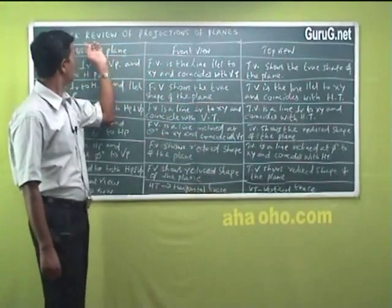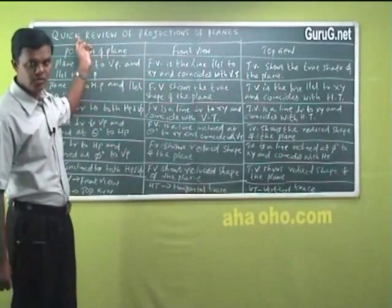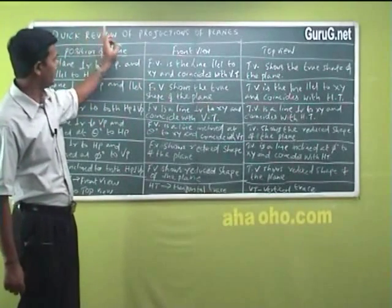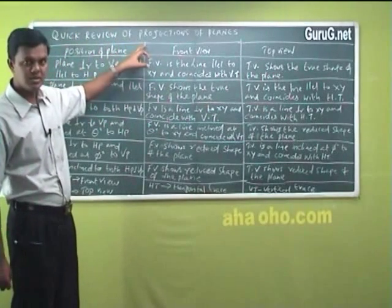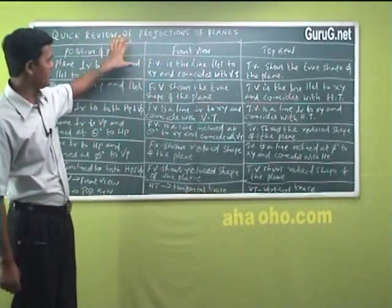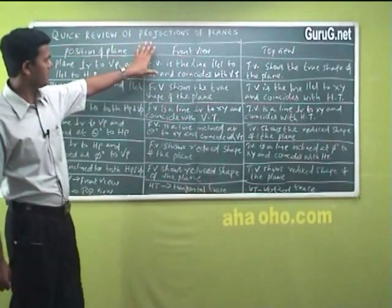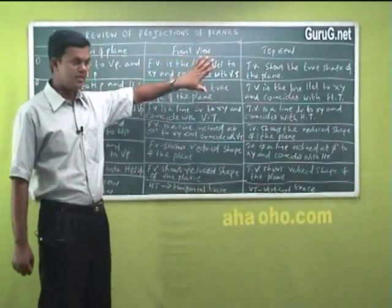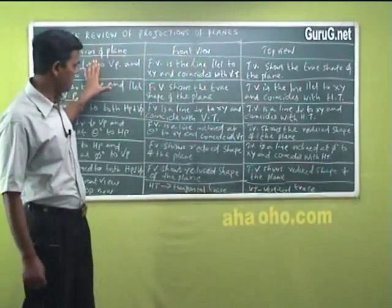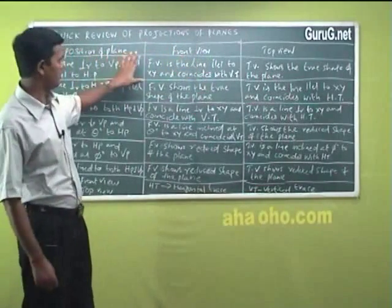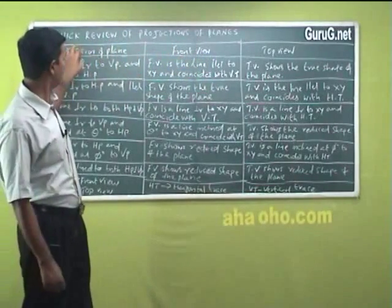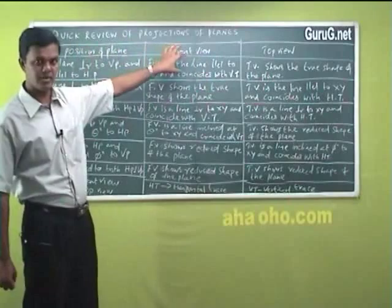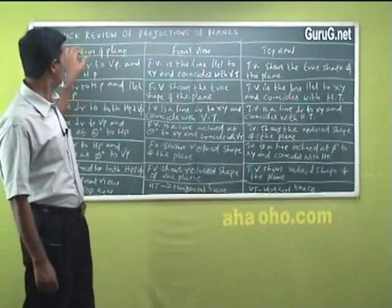This is a quick review for your reference when you are studying about projection of planes. See this table — it is a big table with three different columns.